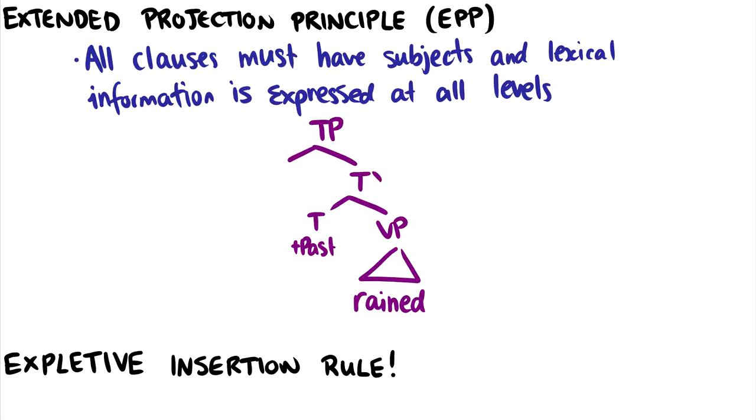Okay, now we can introduce the extended projection principle, also known as the EPP. And the idea is that all clauses must have subjects, and lexical information is expressed at all levels. What this essentially means is that, with a sentence like RAINED, for instance, RAINED does not assign theta roles to any subject or any object. It doesn't take a subject or object. But what this means is that, well, if...